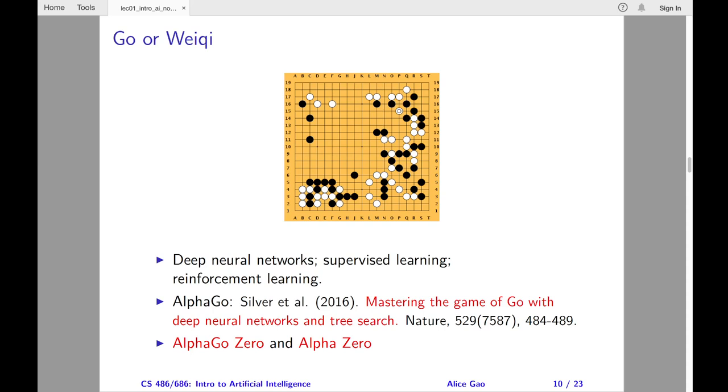The early Go programs relied on tree search algorithms and achieved strong amateur play only. Around 2015, Google DeepMind achieved a breakthrough. They developed a program called AlphaGo, which defeated top professional Go players. In 2015, AlphaGo defeated Fan Hui, who was a European Go champion for a few years.